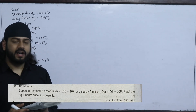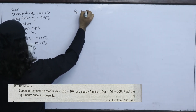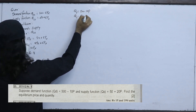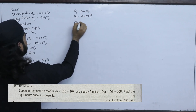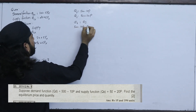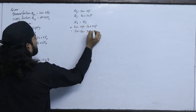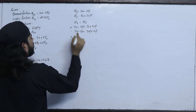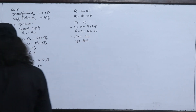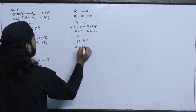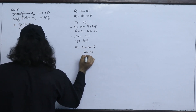Suppose demand function QD = 500 - 10P and supply function QS = 50 + 20P. Determine the price and quantity. At equilibrium QD = QS: 500 - 10P = 50 + 20P, so 450 = 30P, therefore P = 15. The quantity Q = 500 - 10 × 15 = 500 - 150 = 350.